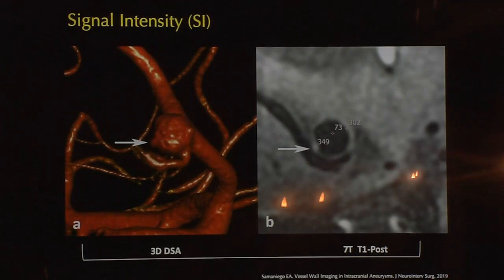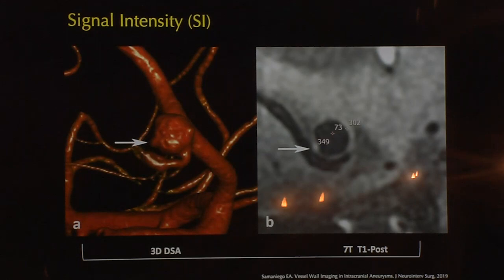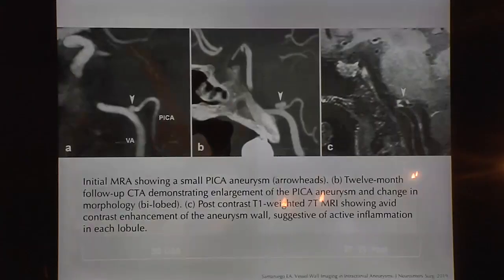The current gold standard for imaging aneurysms is the 3D rotational angiogram, where we often see small details like daughter sacs or blebs. In this particular case of an unruptured aneurysm, a bleb correlates with an area of increasing enhancement on the 7-Tesla MRI. This is a very interesting finding telling us there is a microenvironment — a changing story within the wall of the aneurysm.